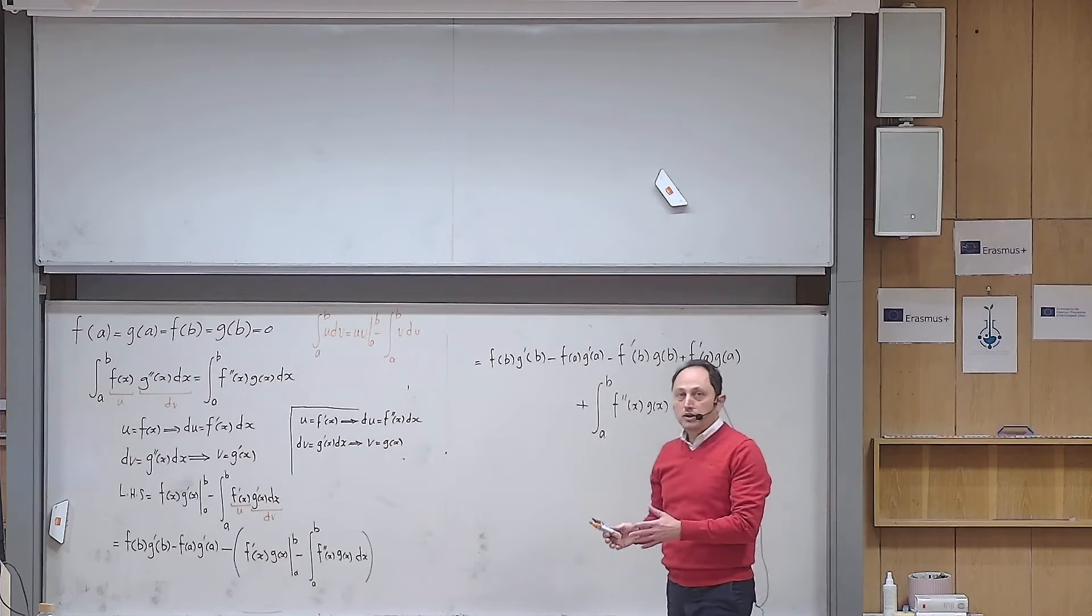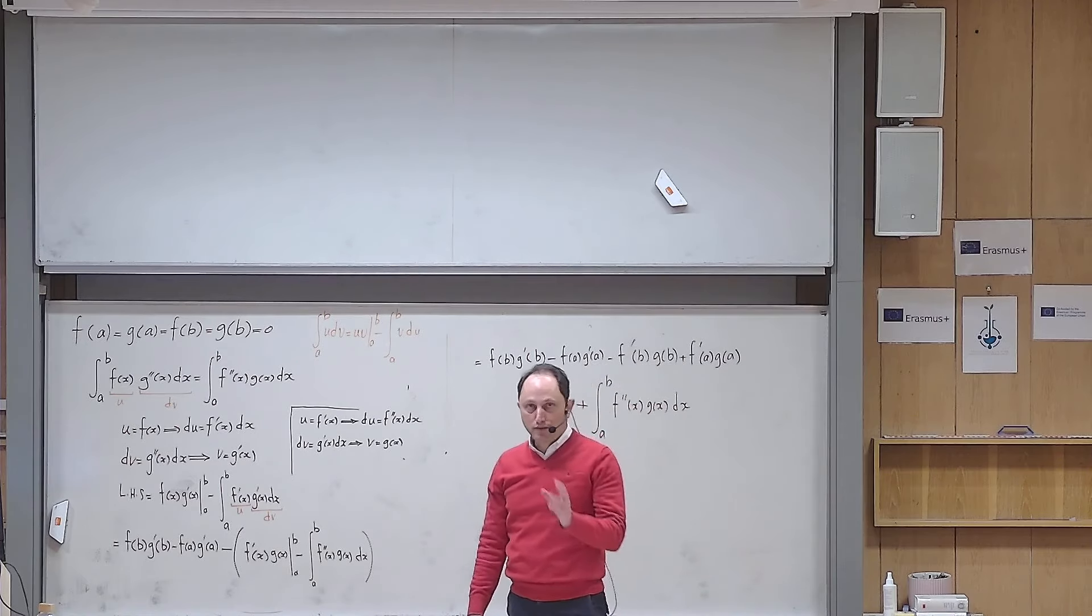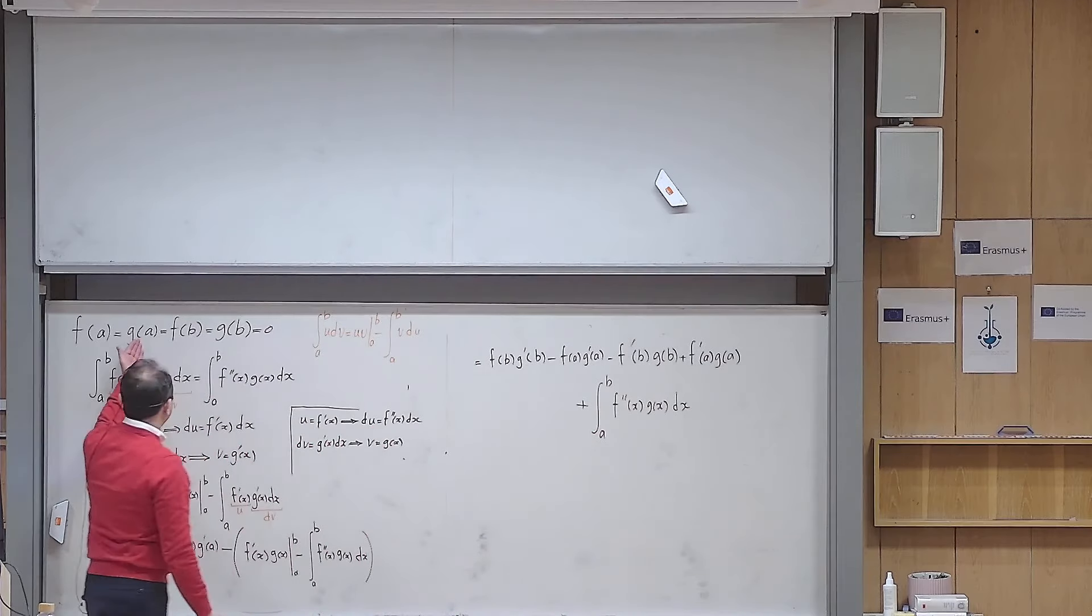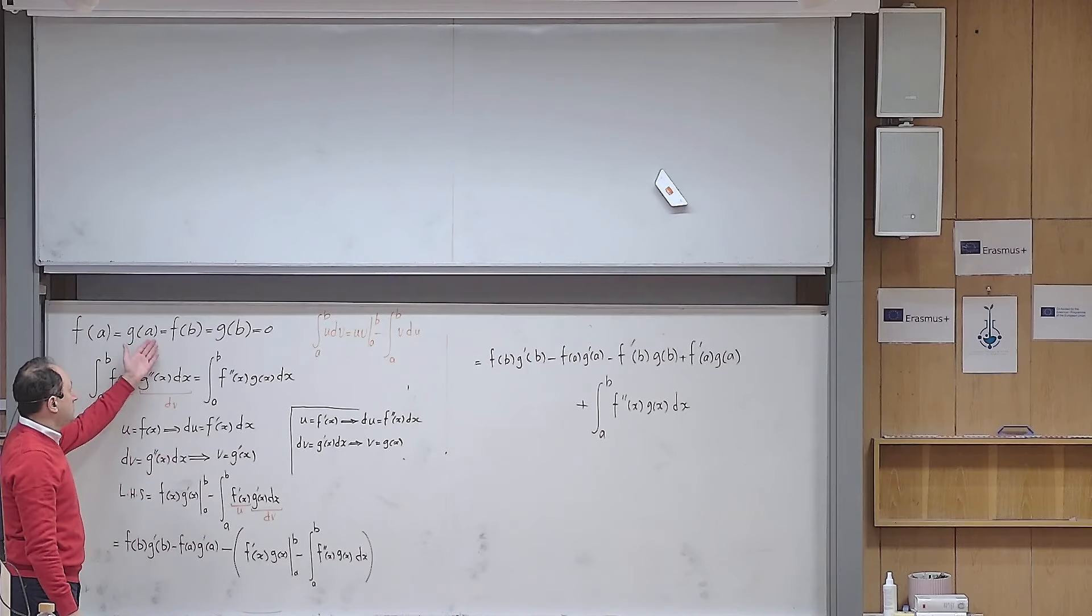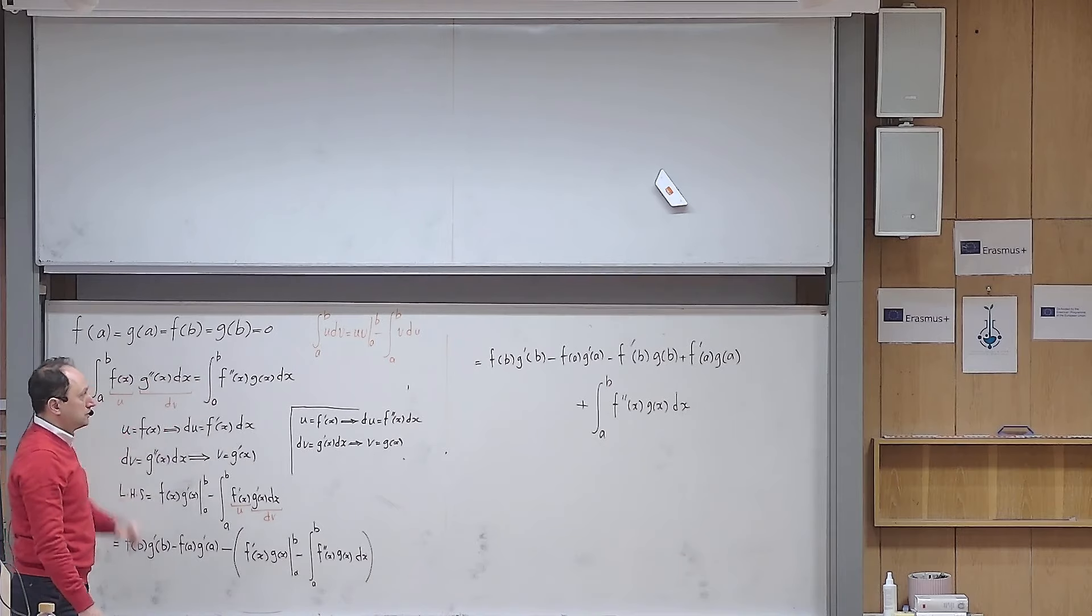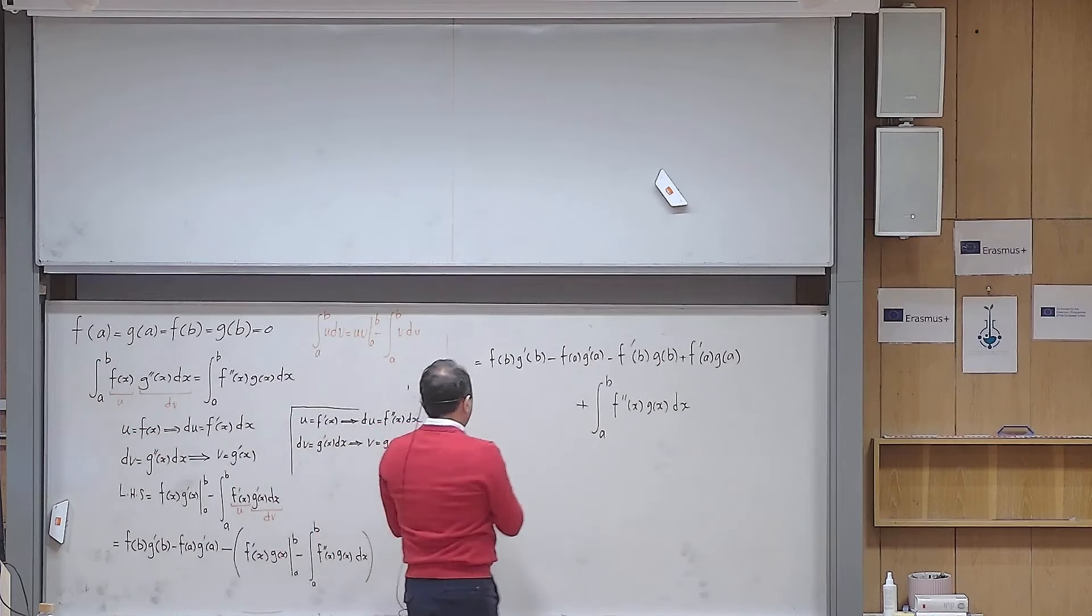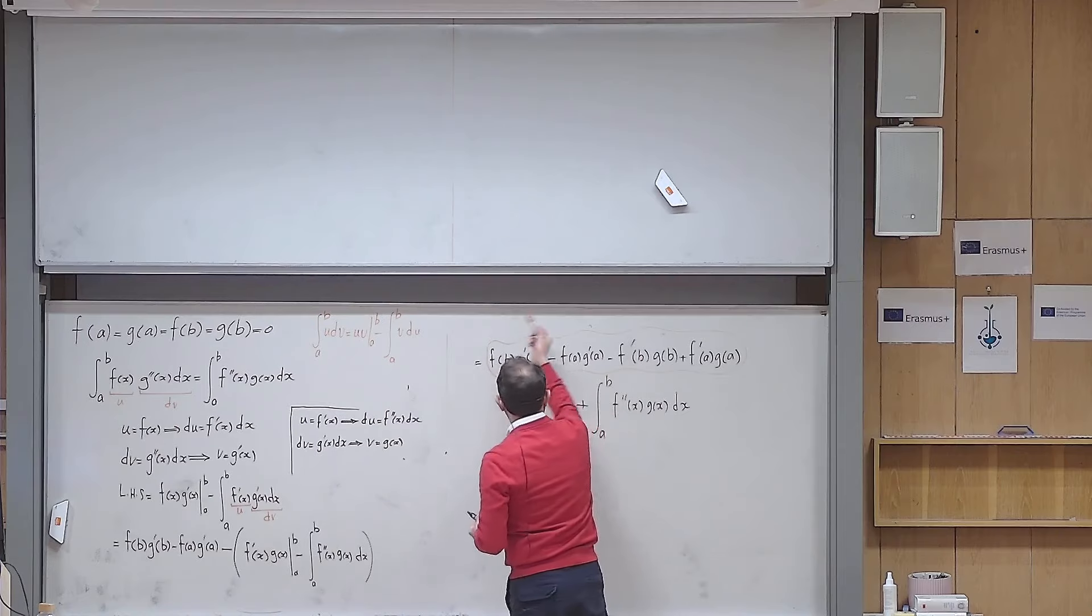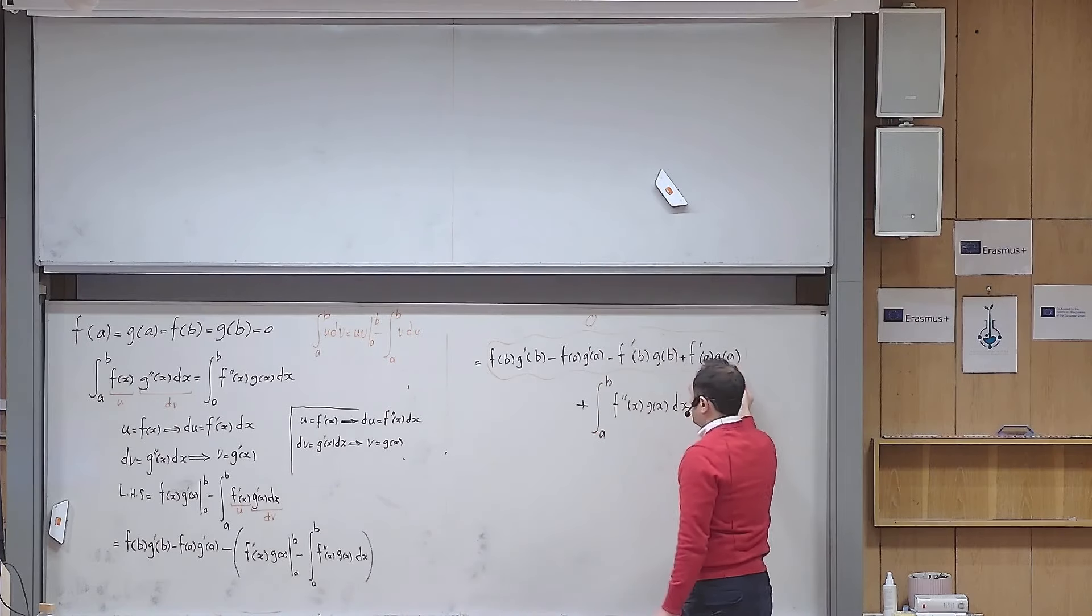But the second part of the question is asking probably what is the most general condition that I have to impose on f and g so that it guarantees this. Of course, this is one possible answer. If f and g satisfy these conditions, then this left-hand side is indeed equal to the right-hand side. But the most general idea is that this should be 0.